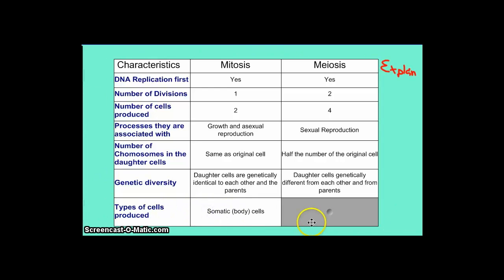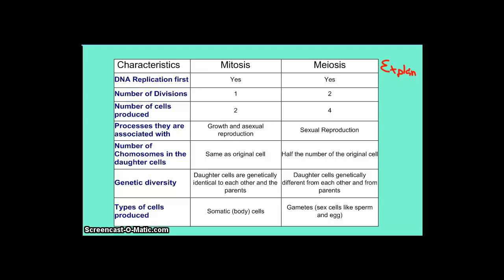Types of cells produced: we call the cells produced by mitosis somatic cells, or cells of the body. We call the cells produced by meiosis gametes, or sex cells — like sperm and egg. That concludes our comparison of mitosis and meiosis. Most of the explanations rely on understanding what the chromosome number starts at, what it ends at, why it needs to get reduced in meiosis, and why it needs to stay the same in mitosis — that's the critical piece to understand about the differences between these two processes.